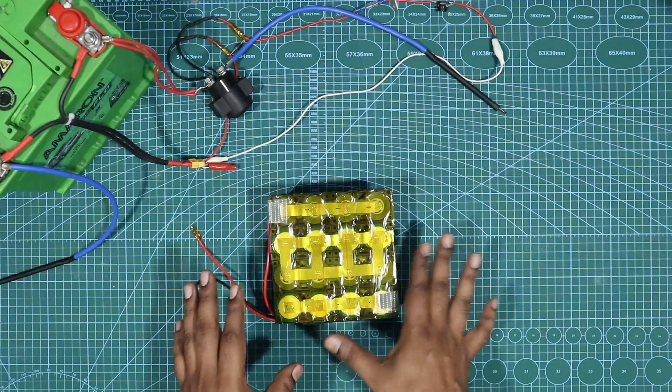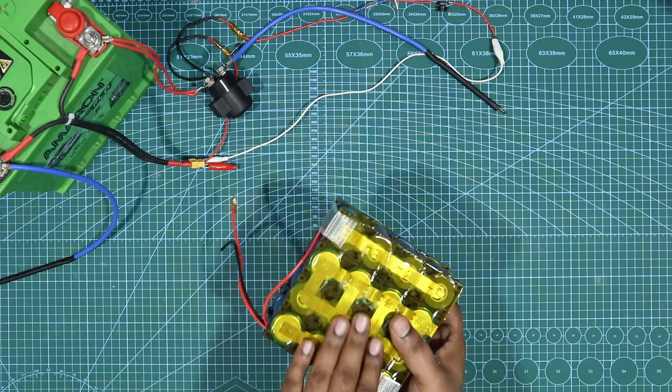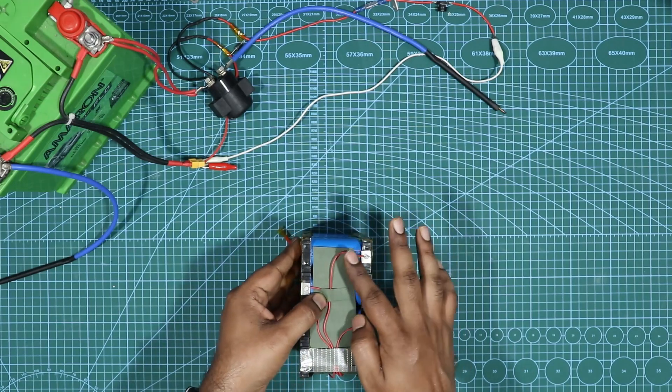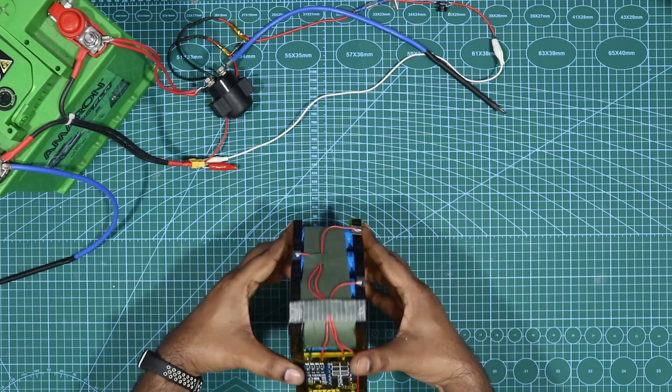So now what I did was I just completed the capton tape on the sides and I connected the barley sheet. And then on the top I have kept the balance cable.